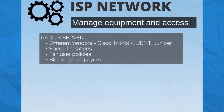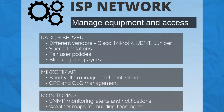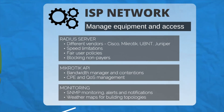The first step is the ISP network. Splings has a RADIUS server which supports different vendors. We also have speed limitations, fair user policies, and blocking of non-payers via the RADIUS protocol. The Mikrotik API allows us to control bandwidth and contentions, and manage costs. Part of Splings is also monitoring with alerts, notifications, and building weather maps for network topologies.